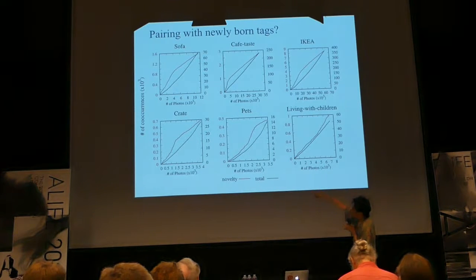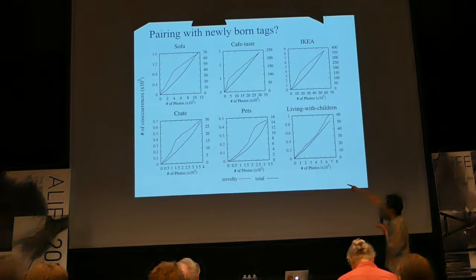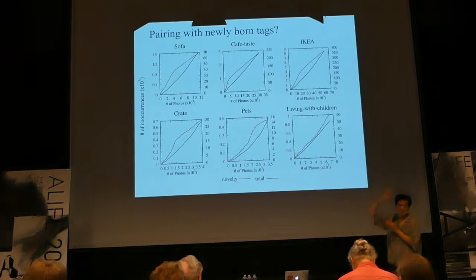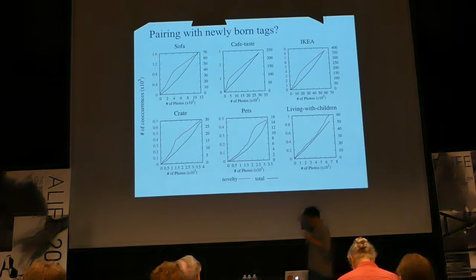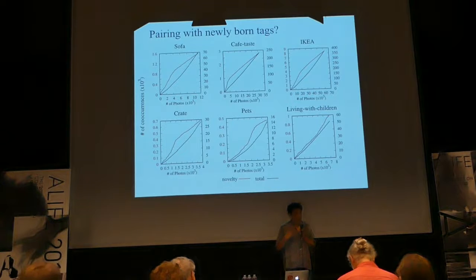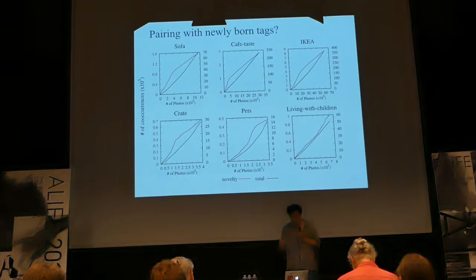There are different classes of tags. Around two to three thousand photo submissions, some tags start creating coupling with new tags. But for example, 'cafe taste' at around five thousand submissions tries to couple with new tags, but then it's gradually decaying. So not just looking at the novelty of each individual tag, but looking at the combinatorial properties of tagging is interesting to understand how these web services create novelties.